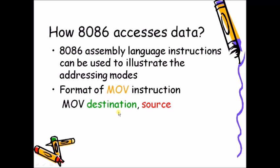An instruction is a command given to the processor so that it can perform a particular task specified by the user. An instruction contains an opcode and a number of operand fields. The opcode specifies what kind of operation the processor has to perform. For example, in a two-operand instruction, MOV is the opcode, destination is one operand, and source is the other. We will use this MOV instruction to understand all addressing modes.